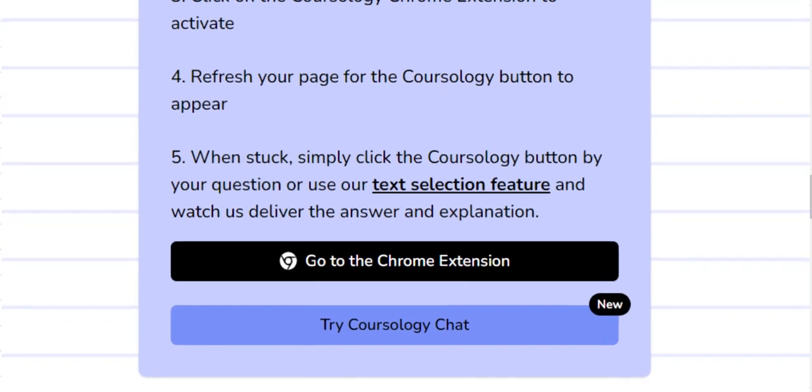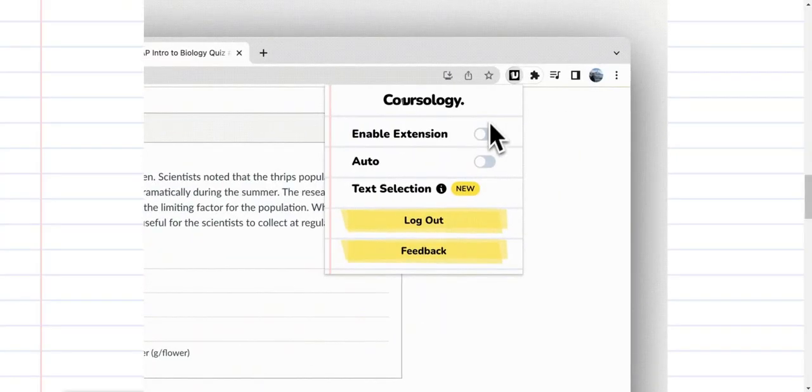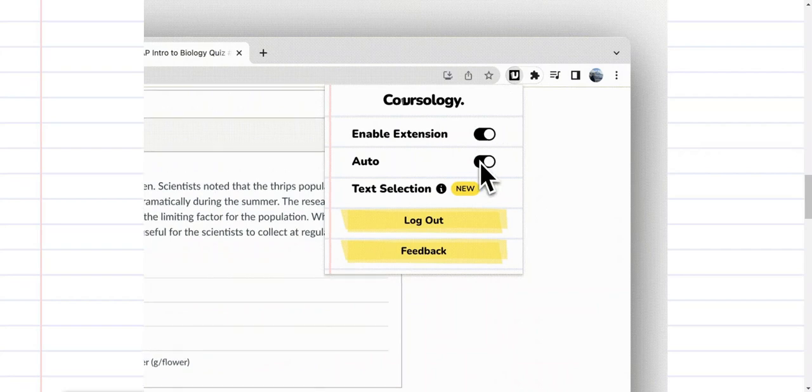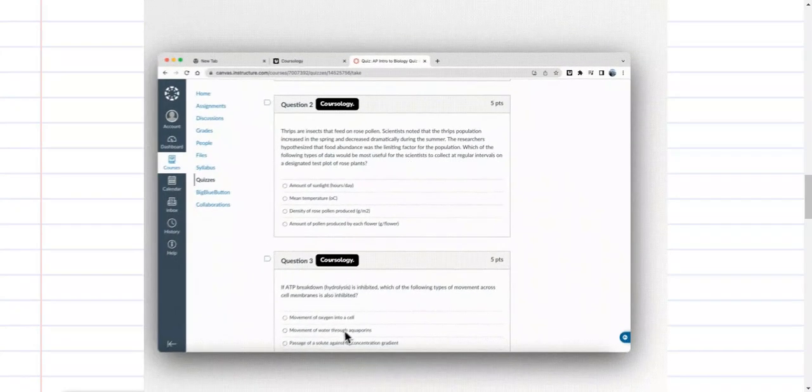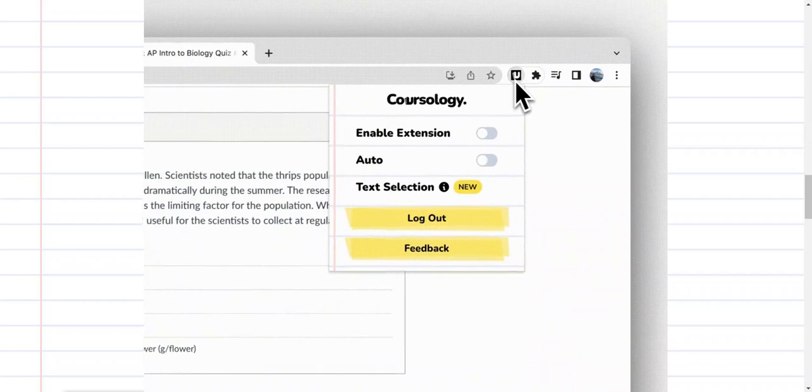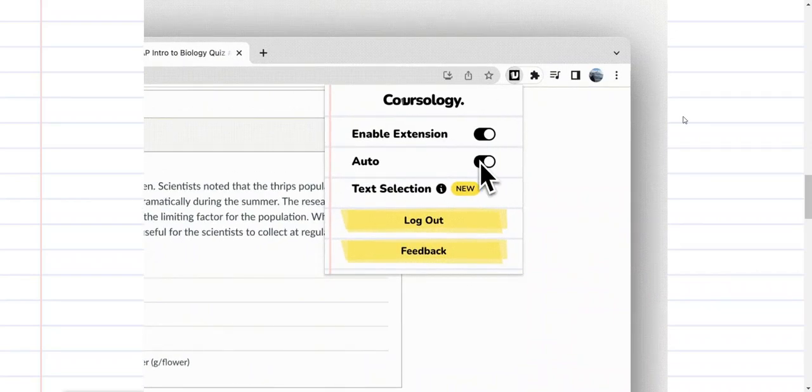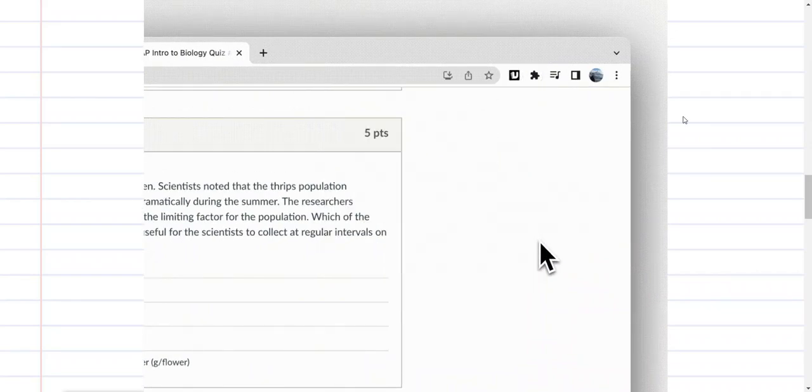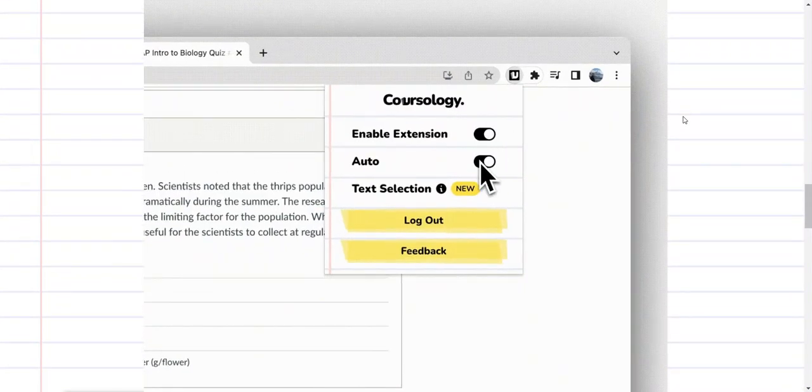Now also, you need to activate this Chrome extension. To activate it, you just need to go to the top of your Chrome and click on the small icon button for Corsology and click enable the extension and click on auto so that it will automatically appear on all your questions whenever you are doing homework or something.